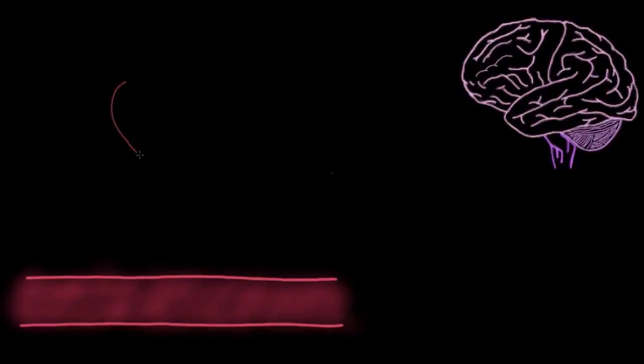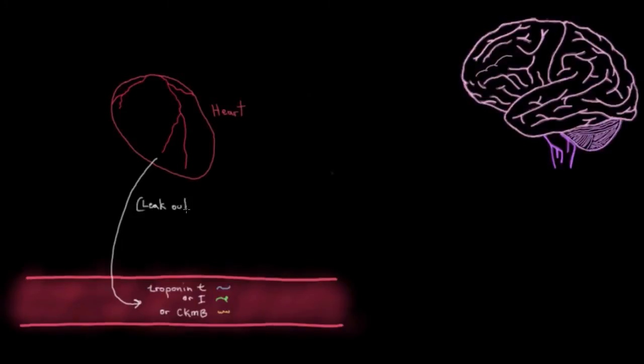Another important blood test to do is one for certain proteins that may have come from your heart muscle, like troponin T or troponin I or CKMB. These are proteins that might leak out of your heart muscle cells when they get injured. You might be thinking, what does heart muscle injury have to do with a stroke? Well, for one, problems with your heart might give you symptoms that look like a stroke. So it's important to check if there is underlying heart muscle injury that's actually causing your symptoms.